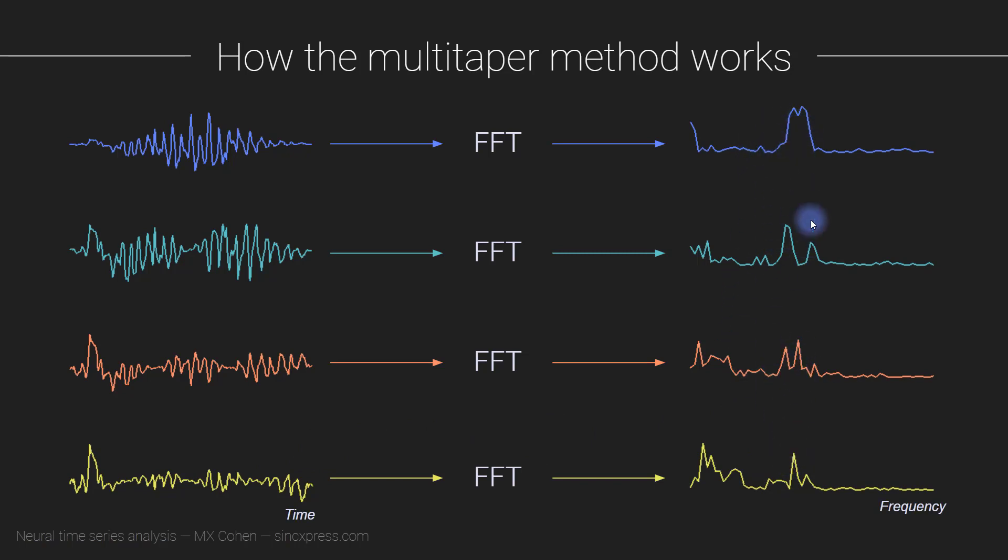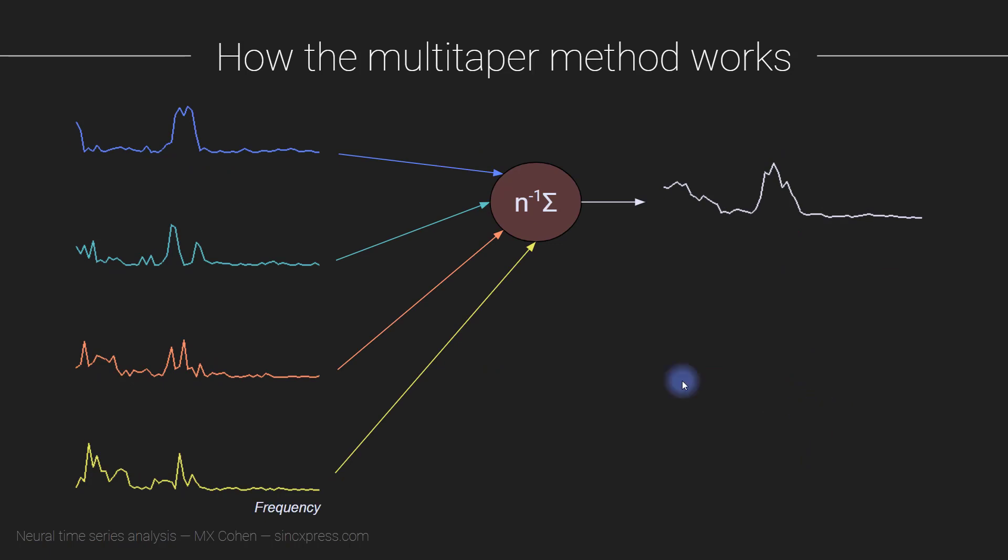So now these are the power spectra here, and I'm going to replot them over here on the left. And then we just average them together. And that gives us one power spectrum. And this corresponds to the multi taper estimate of the spectrum of the data snippet using these different tapers.